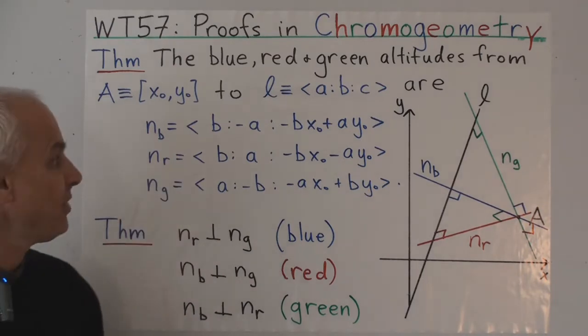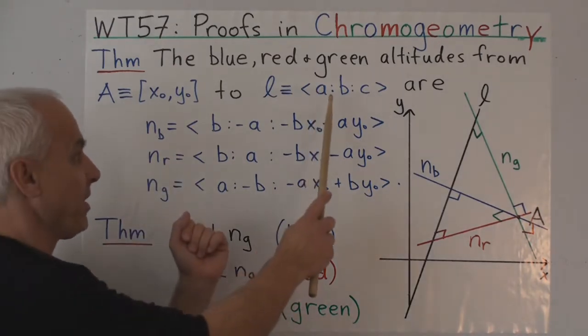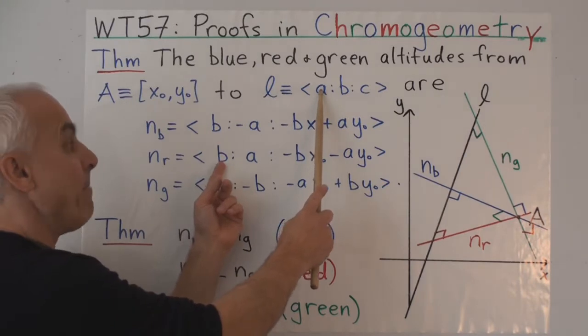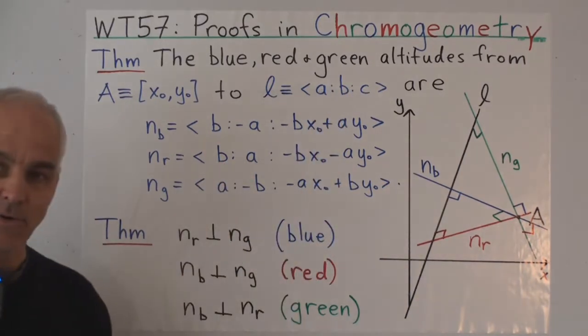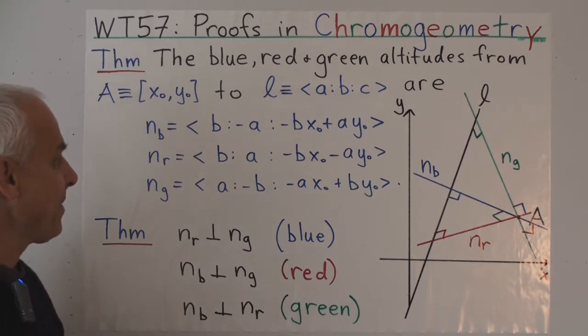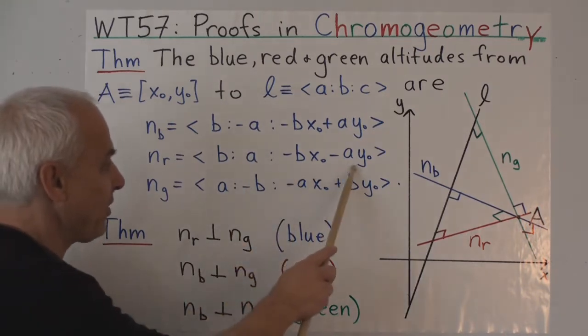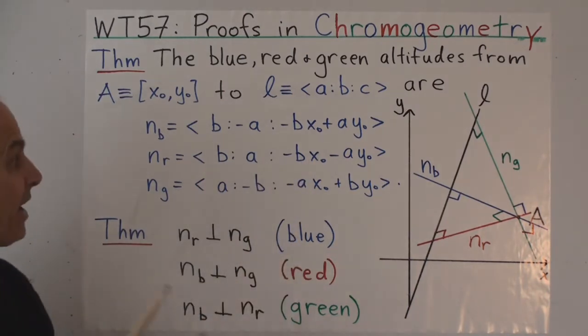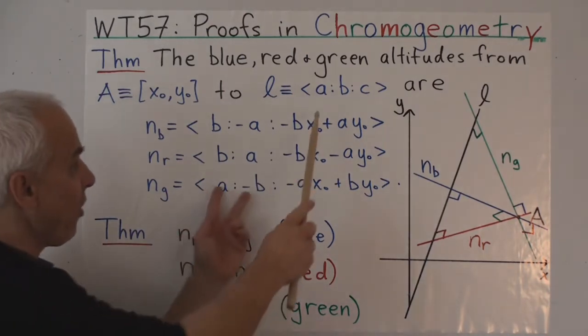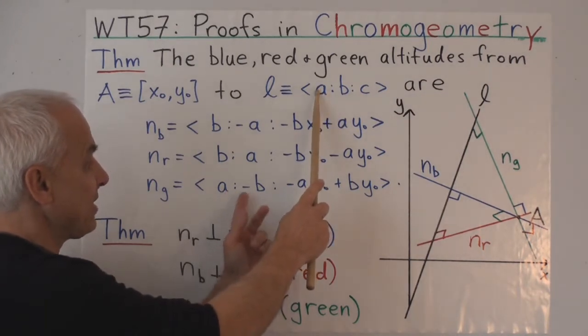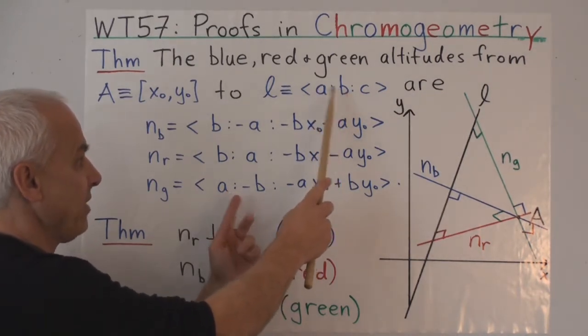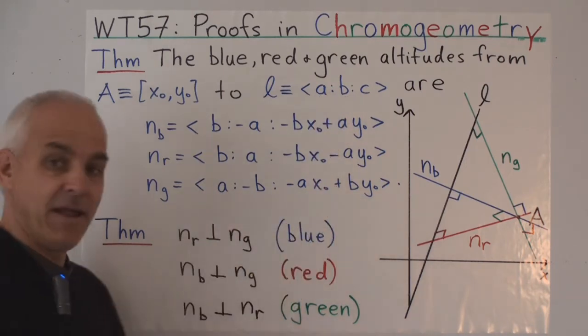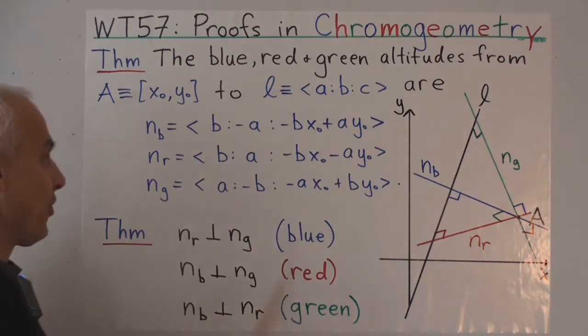Similarly, with the red altitude, we compute for perpendicularity that A times B minus B times A is zero, which is true automatically. And then this quantity here guarantees that point A lies on the line. Our green notion of perpendicularity involves taking A times minus B plus B times A, which is indeed zero. So those two lines are green perpendicular.